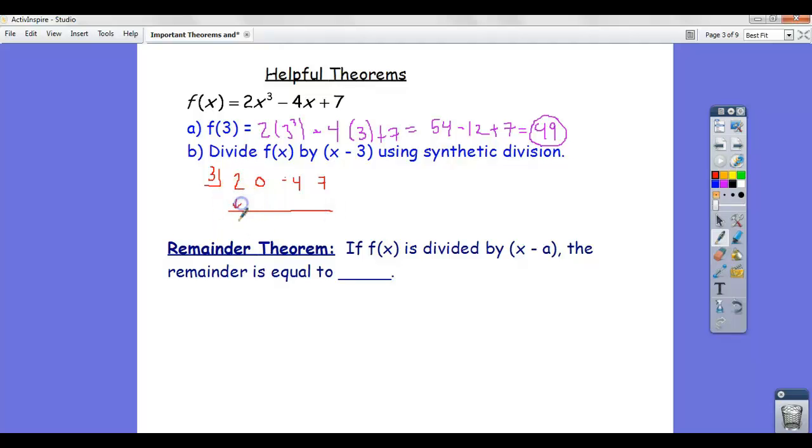So, when I do this division, multiply, add, multiply, add, right? Uh, nope. Multiply too soon. Add. So, 18. Add, you get 14, then you get 42. You add, you get 49.